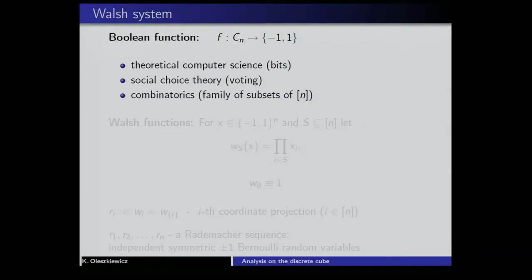The third natural way to view Boolean functions is combinatorics. We can view such functions as families of subsets of the set of integers from 1 up to n. Given an n-element set, consider some family of its subsets — this can be encoded as a Boolean function, with a one-to-one correspondence. There is a correspondence between a single subset and a vertex of the cube: coordinates that are -1 mean those numbers fall into the subset. So there is a one-to-one correspondence between subsets of an n-element set and vertices of the cube, and the Boolean function tells you which family of subsets you choose.